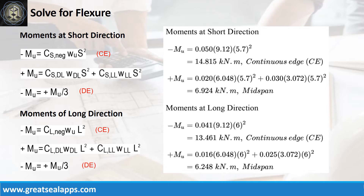Moments at short direction: negative moment at continuous edge is 14.815 kN·m/m; positive moment at mid-span is 6.924 kN·m/m. Moments at long direction: negative moment at continuous edge is 13.461 kN·m/m; positive moment at mid-span is 6.248 kN·m/m.